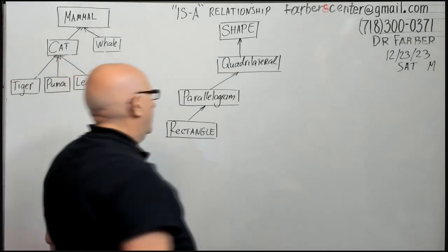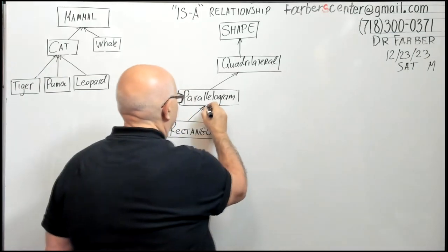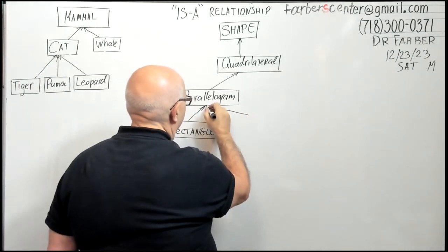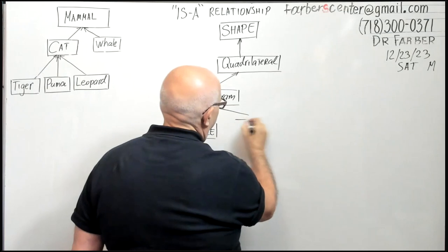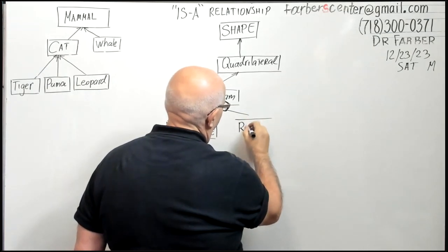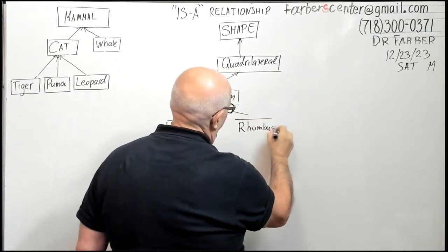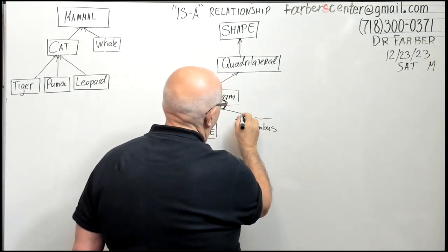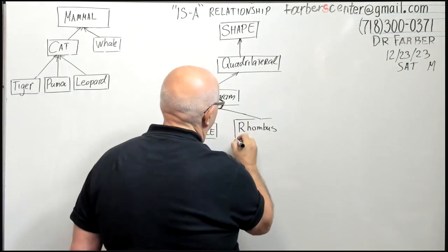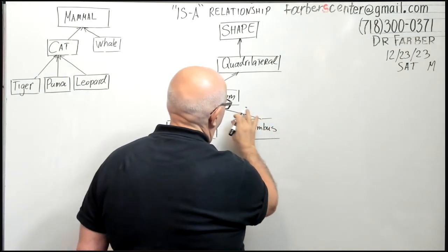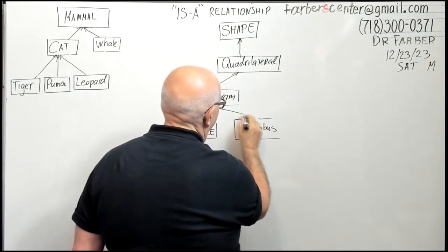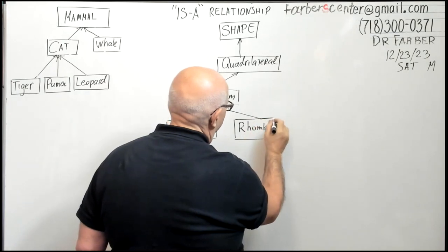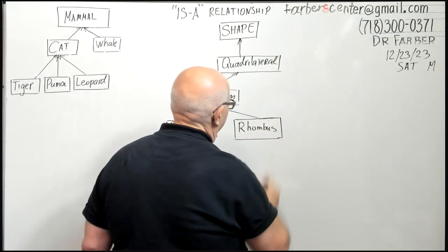You can have a parallelogram where all sides are the same, and this would be the rhombus. So rhombus, instead of memorization of tons of theorems like you're doing in your beautiful school, if you know superclass, you automatically apply all this knowledge to subclass.